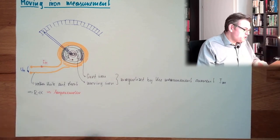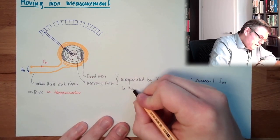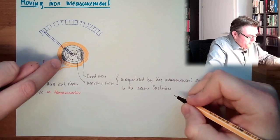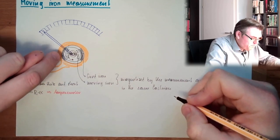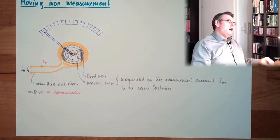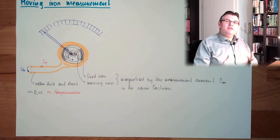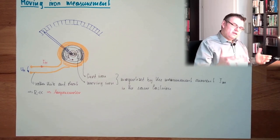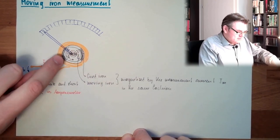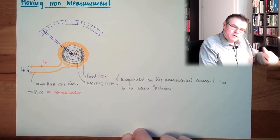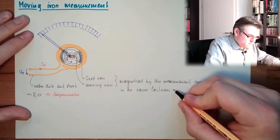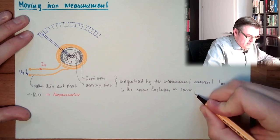Magnetized by the measurement current. How are they magnetized? In the same fashion. This means whenever producing here a north pole, we will produce a north pole on the fixed iron and the moving iron. Those two north poles are pushing themselves away, so they are distracted to each other. So there will be a torque trying to move away this moving iron from the fixed iron, because it is the same magnetic pole.